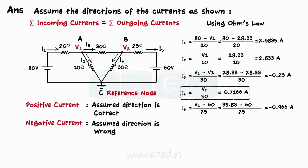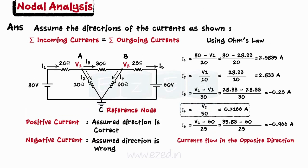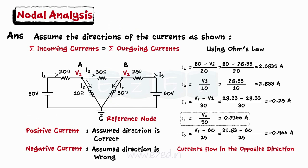Thus, I3 and I5 flow in the opposite direction, whereas all other currents flow in the assumed direction only. Finally, we redraw the network with the changed directions of the currents.